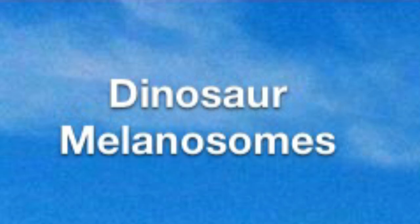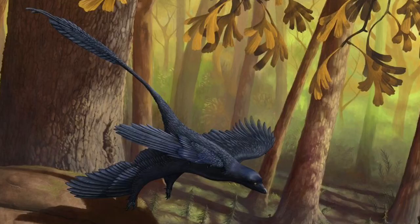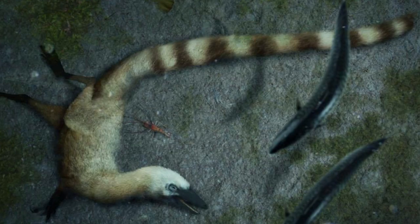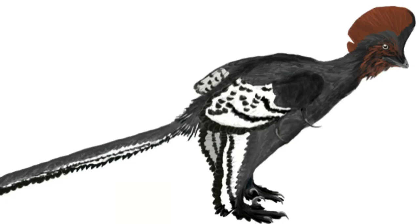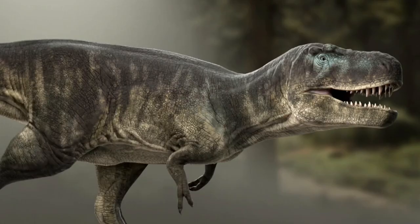Dinosaur Melanosomes. Believe it or not, coloration has been found in some non-avian dinosaurs using fossilized melanosomes. These melanosomes lead us to believe that dinosaurs weren't just brown or green reptiles, but also with colors very similar to today's birds. Microraptor was iridescent black, Sinosauropteryx was brown with white stripes on its tail, Borealopelta was reddish brown, and Caihong was black with red on its head, and more. Let's hope we'll find more melanosomes in dinosaurs to crack out their true colors.